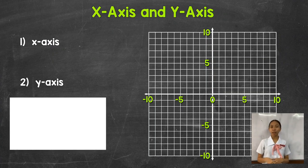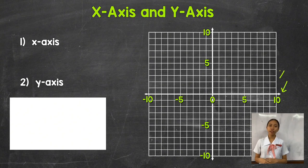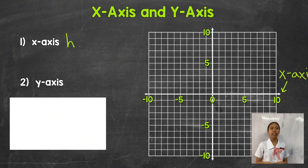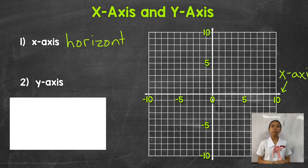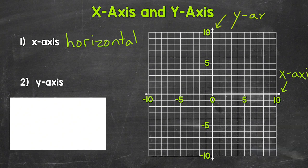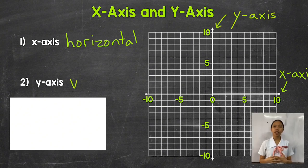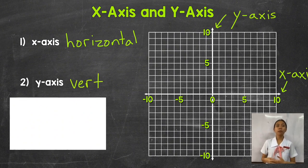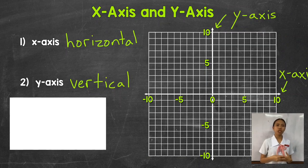We will now explore the key terms associated with understanding a line graph. First is the x-axis, also known as the horizontal axis, which serves as a baseline in a line graph. It typically represents the independent variables such as time, categories, or other quantitative data points. Second is the y-axis, or vertical axis, which stands perpendicular to the x-axis and represents the dependent variable, indicating the values being measured or observed.